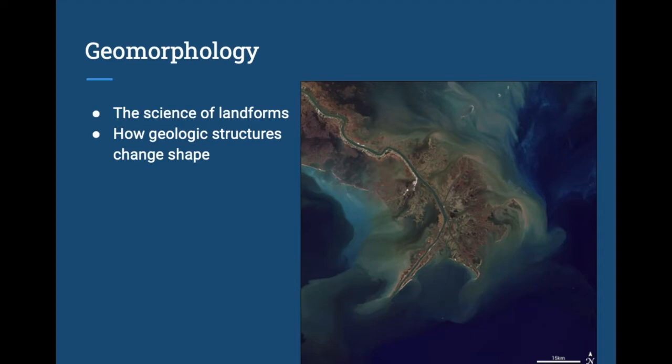Morph means what? I pause and let you shout out — change, which is complete garbage. It actually means shape. We've turned morph into a verb, like the Power Rangers. But it's really referring to shape. And then ology is the study of. So it's the study of the shape of things on the earth. Or more simply, it's the science of landforms.